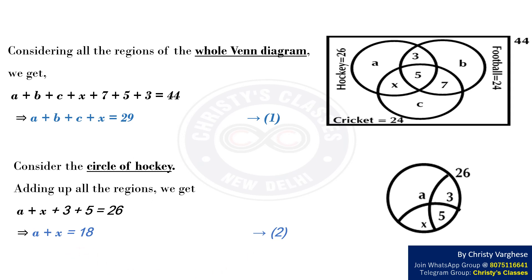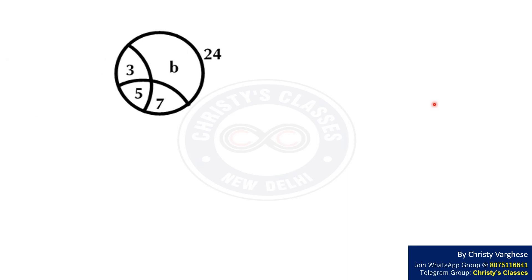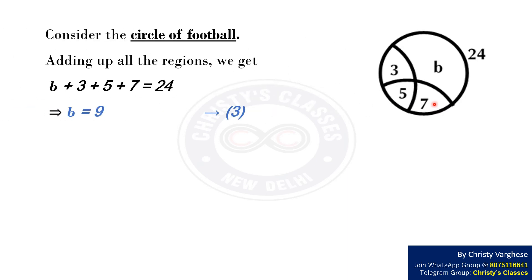Now consider the circle of football. Adding up all the regions, we get B plus 3 plus 5 plus 7 equals 24. This implies that B equals 9. Let this be equation 3.